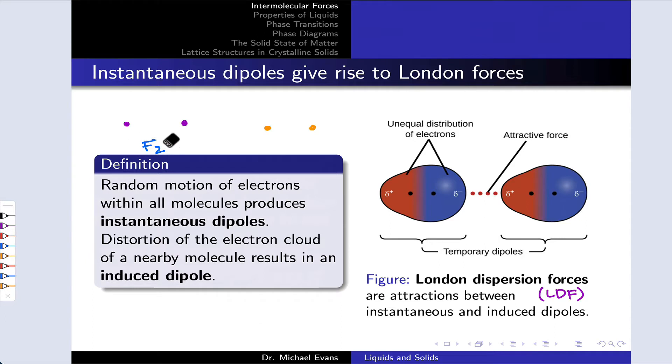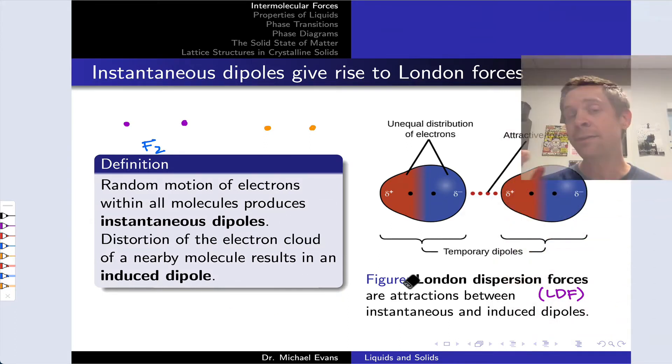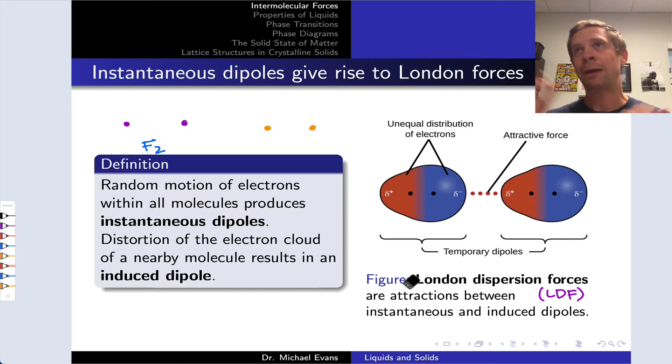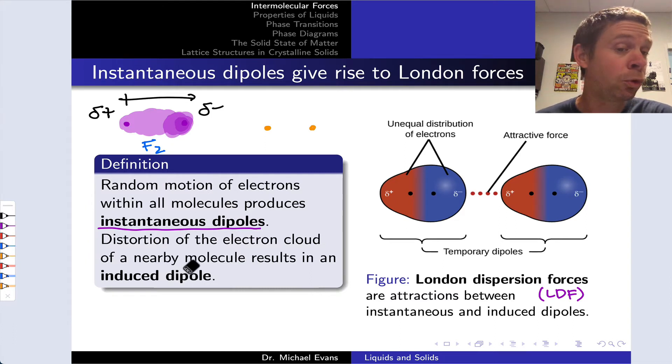Imagine we're dealing with an F2 molecule, and here I've drawn the two fluorine nuclei just as purple circles. At any given moment in time in F2, even though it's a non-polar molecule, the electrons will just by random chance tend to be on one side of the molecule or the other, if for the briefest of moments. If we were to take a really fast picture of the electron distribution in F2 at any given moment in time, we might find more electrons near the right-hand fluorine as opposed to the left-hand fluorine. This gives rise to what's called an instantaneous dipole. There is actually a dipole moment within this non-polar molecule for the briefest of moments. That's why it's called instantaneous.